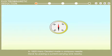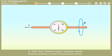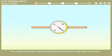In 1820, Hans Orsted made a compass needle move by placing a current-carrying wire nearby. This simple act clearly demonstrated that electricity and magnetism are linked.